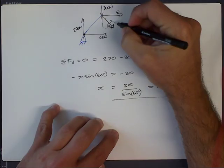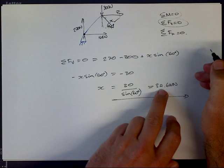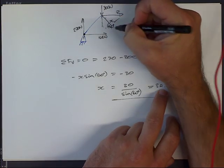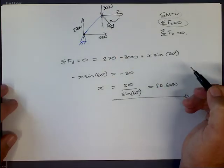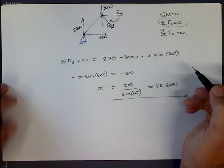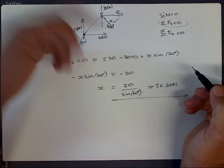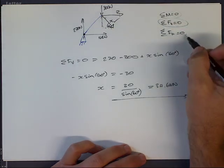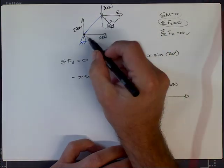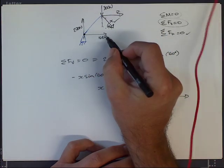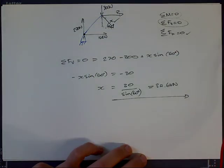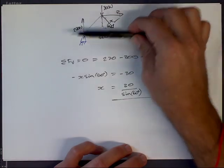That's now given us the value for x, which is 34.64. Now we know x's value, we've calculated y, and the last one we need is z. For z, we can either again choose moments or we can choose the horizontal or vertical components. If I chose forces horizontal, I would add up our answer for y with the horizontal component of x and find the remainder because all horizontals need to add up to zero.